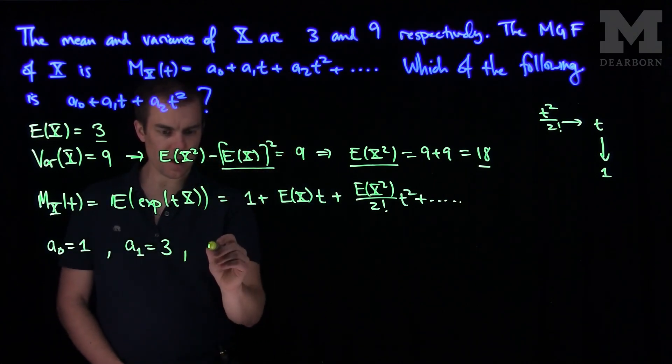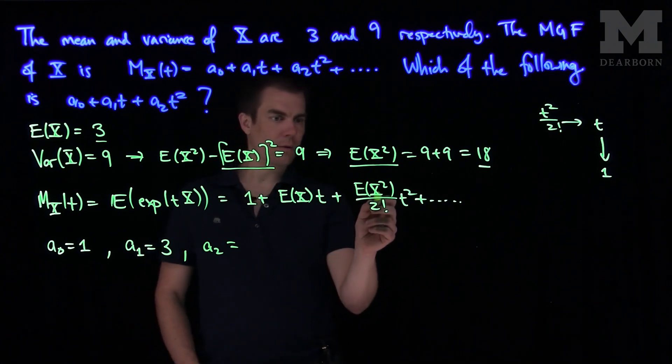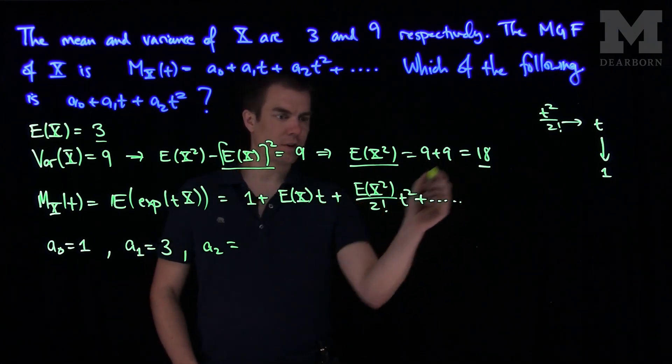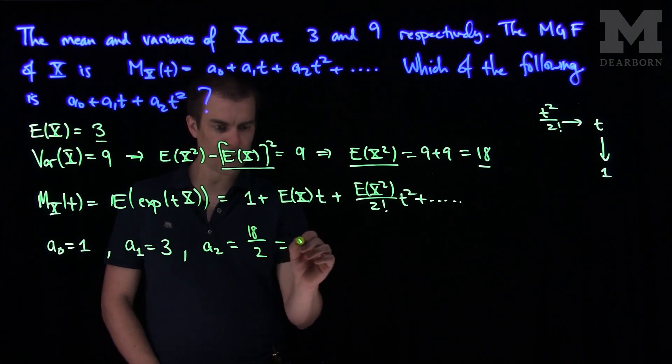And so that tells me that a₂ is going to be this expected value of X squared, which we just found over here to be 18. So it's going to be 18 over 2, and that's going to be 9.